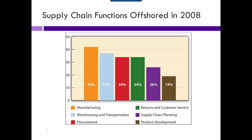Outsource means having somebody outside your company do it. Offshore means having somebody in another country do it. Types of things that get offshored include manufacturing, warehouse and transportation, procurement, returns, and customer service. When you call customer service or tech support, your call may be outsourced or offshored somewhere else. Rather than maintaining all that in-house, these are the types of functions that people tend to offshore more.